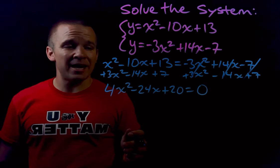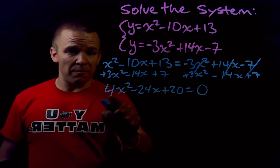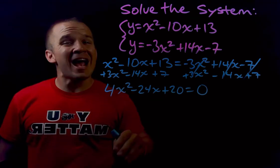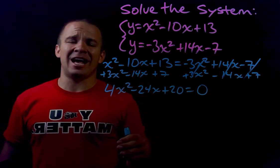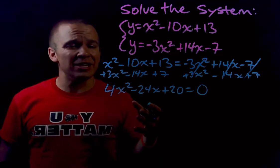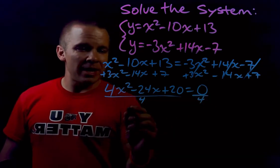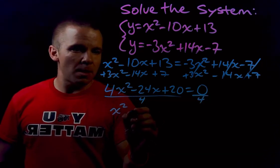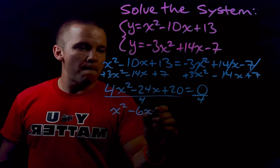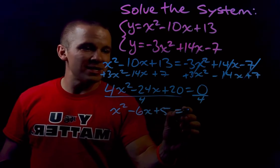So now that I have everything on the left-hand side, I can divide everything by four and that's gonna make my life a lot easier because I don't have to factor with a lead coefficient. If I divide both sides by four, I get x squared minus 6x plus 5 equals 0.